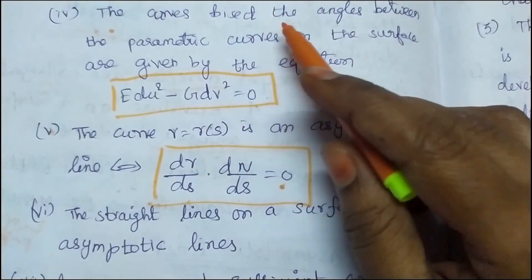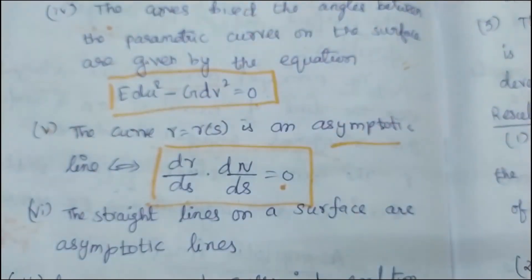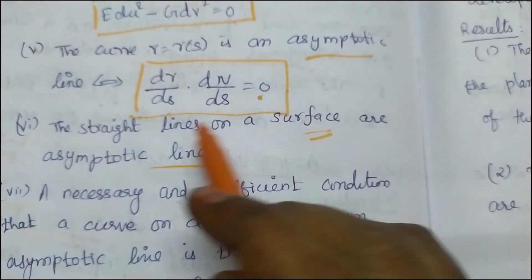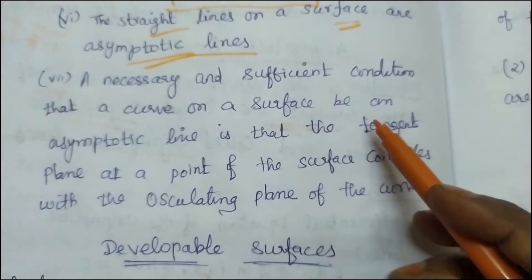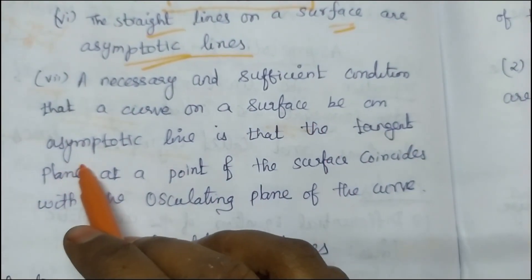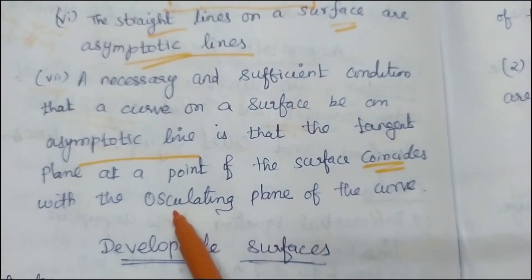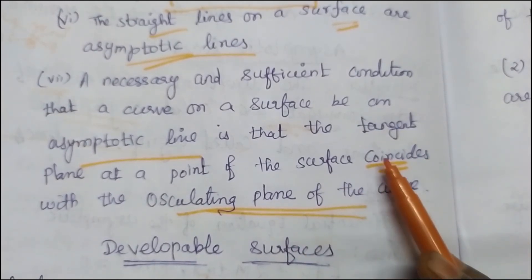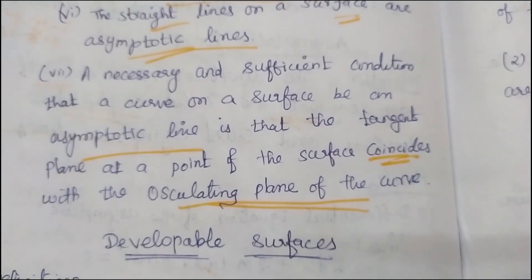Because of the angle bisecting over the surface, asymptotic lines — if there is a straight line, the curve is an asymptotic line. Is the tangent plane at a point on the surface coincident with the osculating plane? So the curve is asymptotic when the osculating plane coincides with the tangent plane. That is the asymptotic line — tangent plane coincides with the osculating plane.